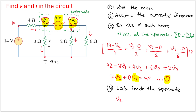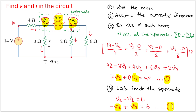So we write: v2 minus v1 equals 6. Rearranging, we get minus v1 plus v2 equals 6. This is equation two. Now we have two equations with two unknowns, v1 and v2, and we can solve for both.